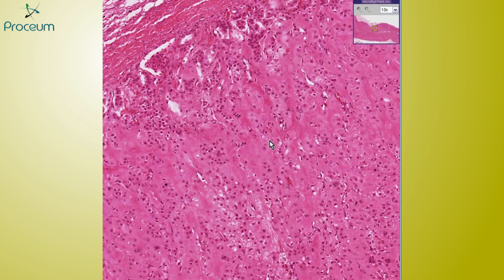Amyloidosis can occur in just about any organ. In this case, it happens to be an adrenal. Thank you very much.